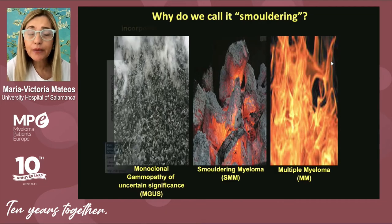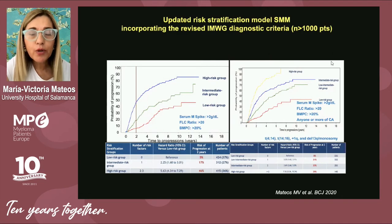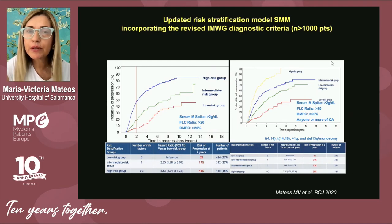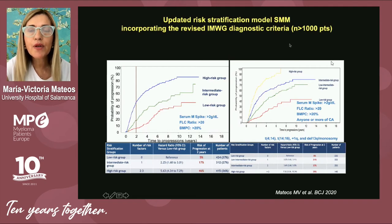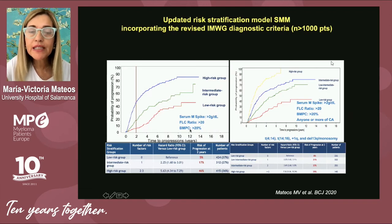When we have a patient with smoldering myeloma in the clinic, the first thing the hematologist must do is evaluate which risk group the patient belongs to. The International Myeloma Working Group evaluated more than 1,000 smoldering patients to establish a risk model. This model includes three factors: serum M spike greater than 2 grams, serum free light chain ratio greater than 20, and plasma cell bone marrow infiltration greater than 20%. When a patient presents none of these factors, the risk of progression to multiple myeloma is very low.